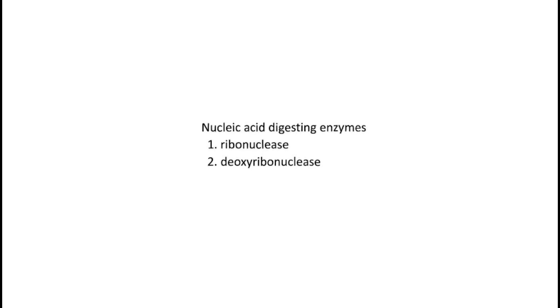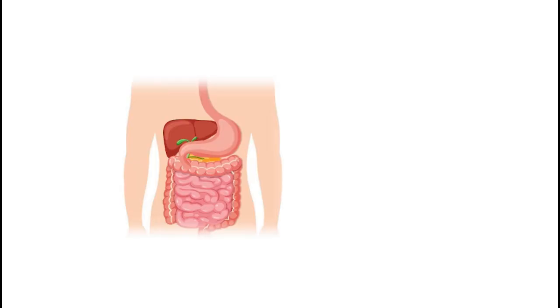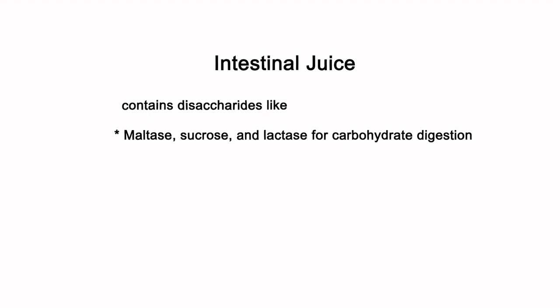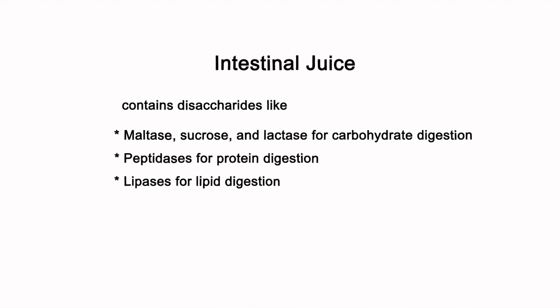These enzymes each contribute differently to digestion, so you can research online to find their individual roles. Other than these liquids, the small intestinal lining itself secretes an enzyme-rich juice called intestinal juice. This contains disaccharides such as maltase, sucrase, and lactase for carbohydrate digestion; peptidases for protein digestion; and lipases for lipid digestion.